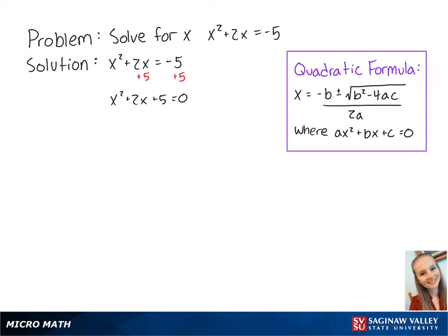Since the left side can't factor out, we're going to use the quadratic formula to solve for x. In this equation, a equals 1, b equals 2, and c equals 5.